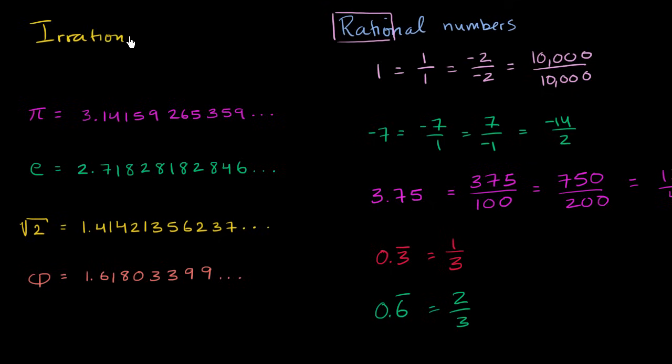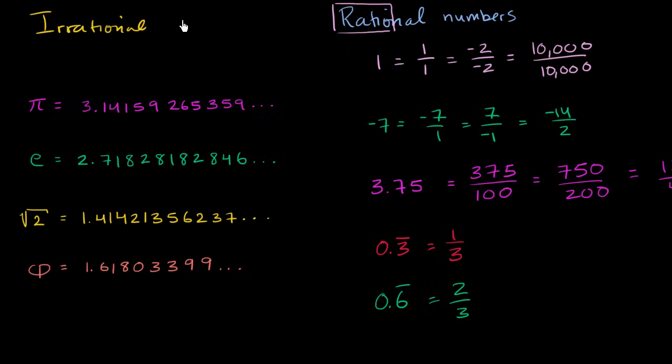Irrational numbers. And I've listed just a few of the most noteworthy examples. Pi, the ratio of the circumference to the diameter of a circle, is an irrational number. It never terminates. It goes on and on and on forever. And it never repeats.